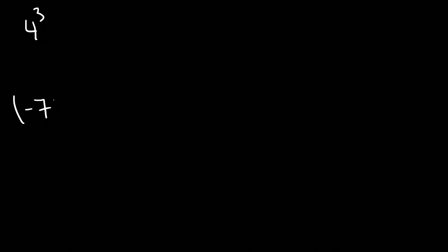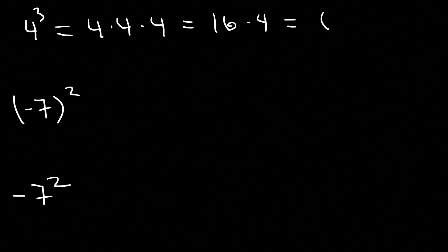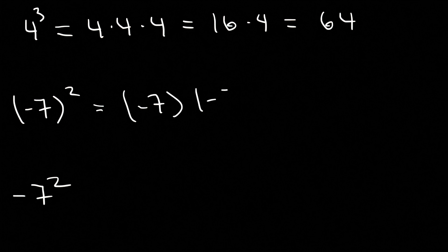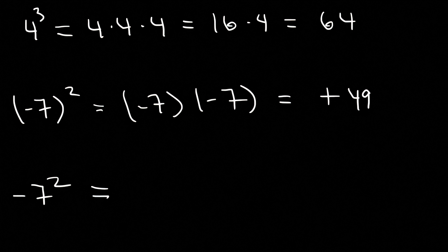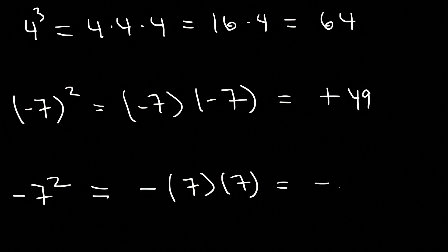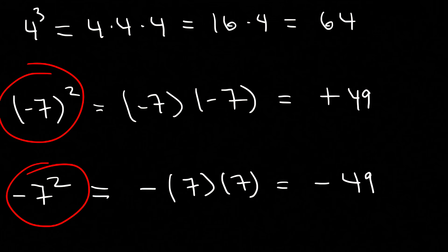Here are more examples: 4 to the 3rd, negative 7 squared with parentheses, and negative 7 squared without parentheses. 4 cubed is 4 times 4 times 4 — 4 times 4 is 16, and 16 times 4 is 64. Negative 7 enclosed in parentheses and squared is negative 7 times negative 7, which is positive 49. Without parentheses, the exponent only affects the 7, not the negative sign — so it's negative (7 times 7), giving negative 49. Make sure you understand the difference between these two types of problems.